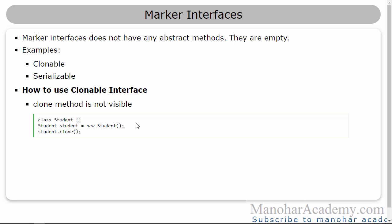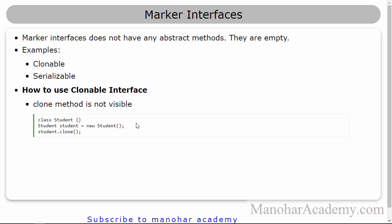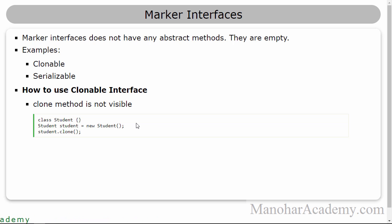The good examples for marker interfaces are Cloneable and Serializable. Let's see how we can implement the Cloneable interface. When we are talking about cloning or cloneability, we are talking about creating a completely new object from an existing object.